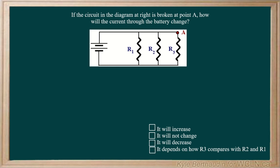If the circuit in this diagram is broken at point A, right here, how will the current through the battery change?